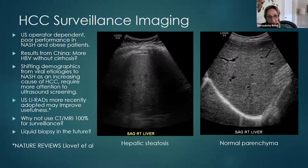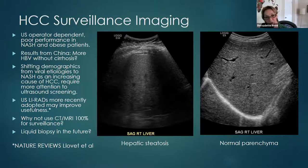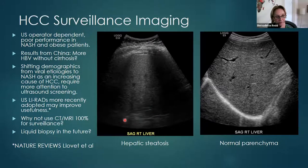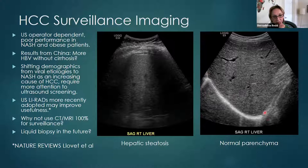Why isn't ultrasound a more robust screening tool? Ultrasound is operator dependent and therefore not highly reproducible. It has poor performance in NASH patients and obese patients — meaning patients with hepatic steatosis. In patients with hepatic steatosis, it's technically more difficult to penetrate liver parenchyma with ultrasound waves, making it harder to see the entire liver and its internal architecture. This is an example of a patient with hepatic steatosis — you can see areas of shadowing where we're not getting a good look at the liver parenchyma, and our evaluation of the posterior margin is limited.